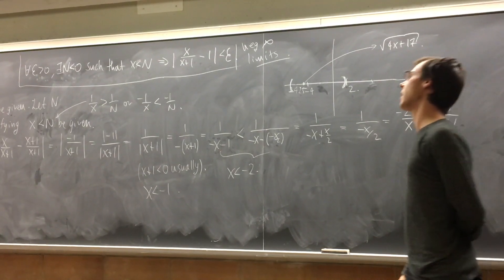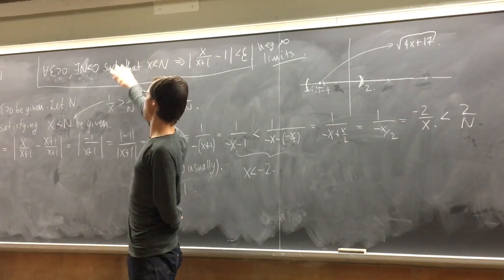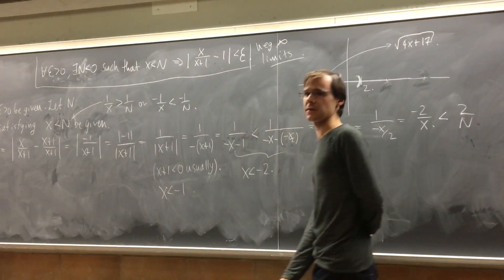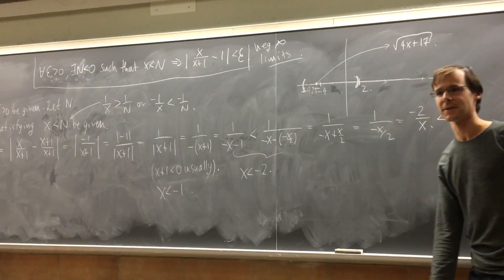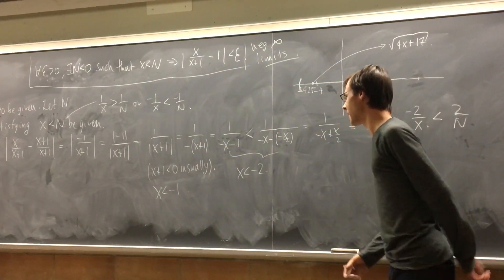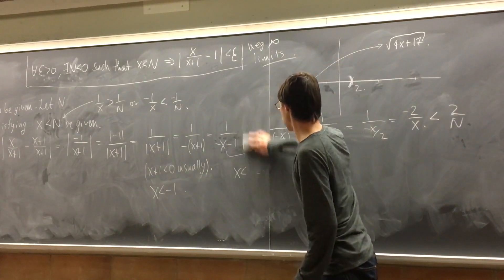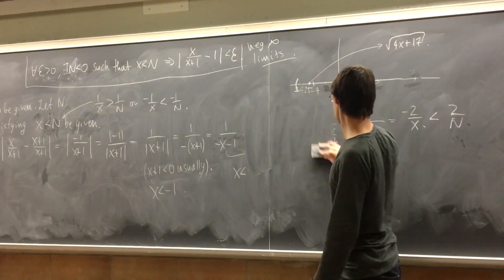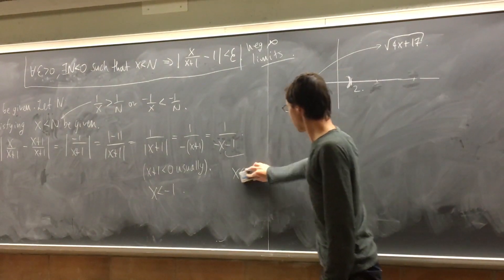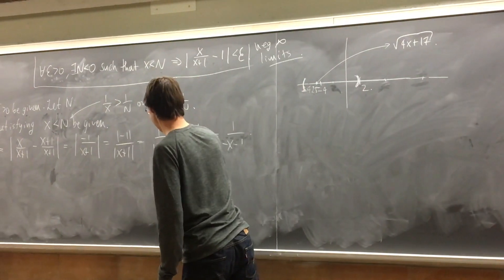Also, the reverse triangle inequality states that |A − B| ≥ |A| − |B|. This is handy for getting upper bounds on 1 over a quantity — for example, when proving that 1/x is continuous, or when you have a rational function with x's in the denominator and you're trying to get an upper bound.